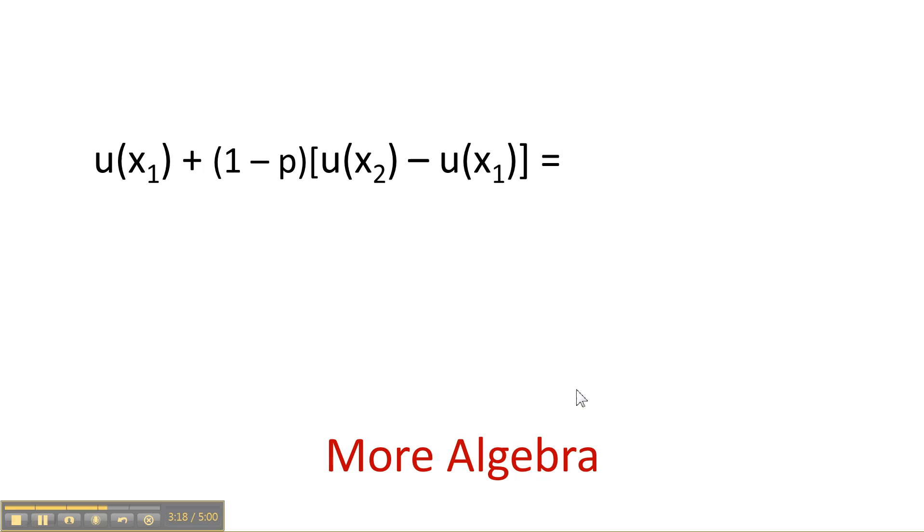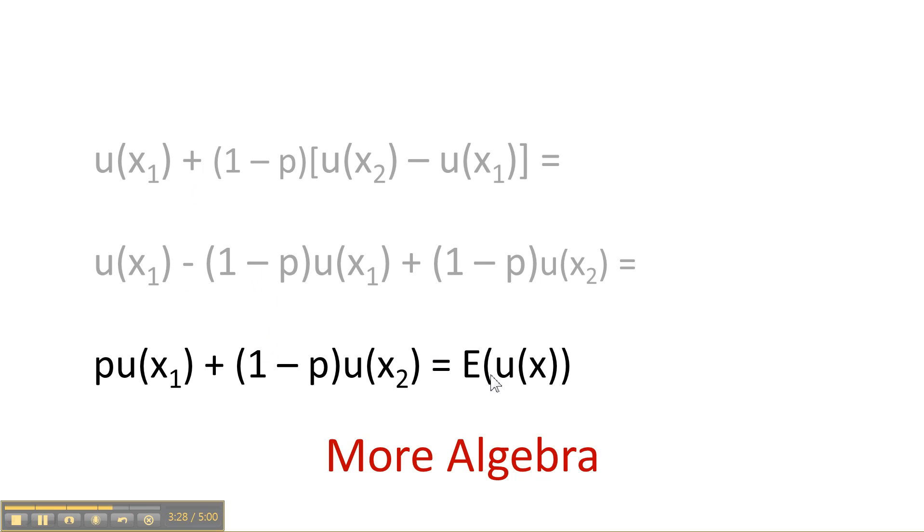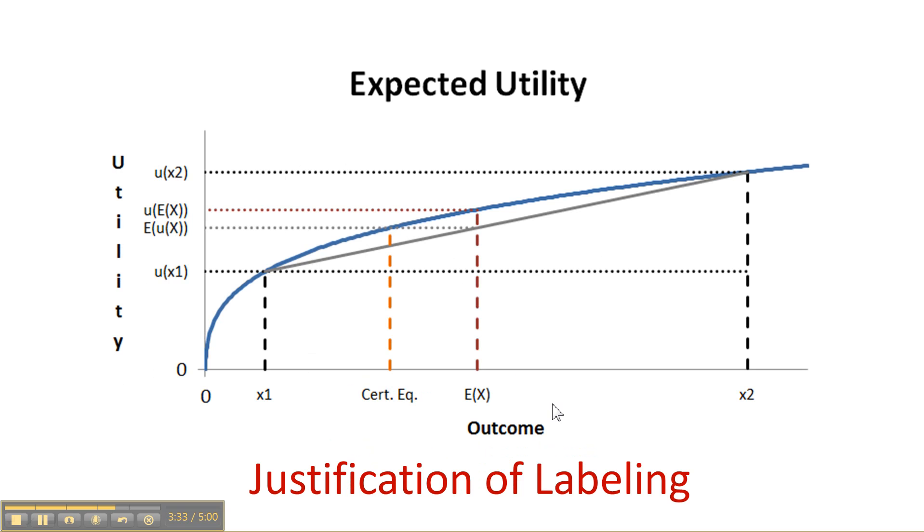So the height of the smaller triangle is 1 minus p times the difference in utilities. If you add that height to the original u of x1, what you get with a little bit of algebra, and I'm just going to go through this quickly, is the expected utility of x. And so that shows, in fact, that this height right here is the expected utility of x. And that justifies the diagram.